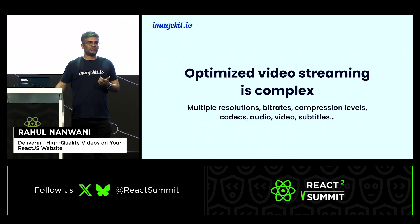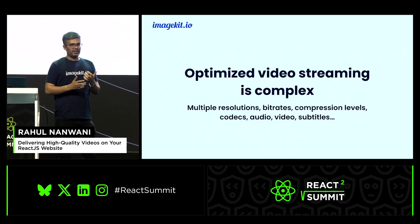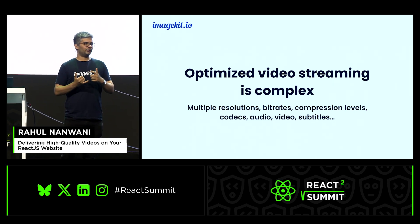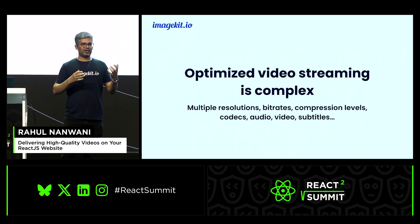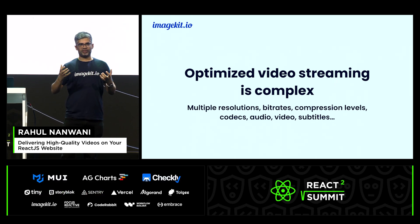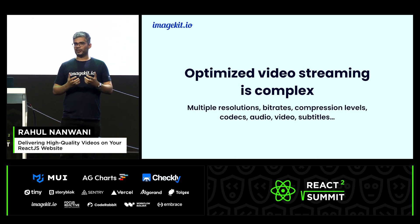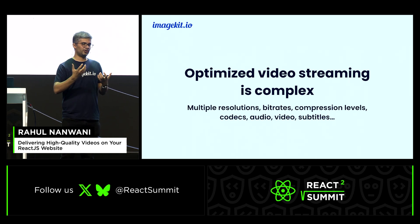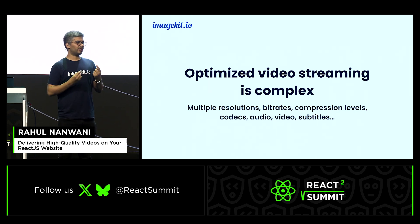Video streaming is complex — it's not easy. There are multiple resolutions, codecs, bit rates. You have to deal with audio, video, subtitles. You have to store these chunks somewhere, then configure a CDN to deliver it. In our experience, a lot of developers either completely skip the optimization part and just deliver the high-quality video directly to users, or they create one variant and deliver that single variant to every user on mobile and desktop.